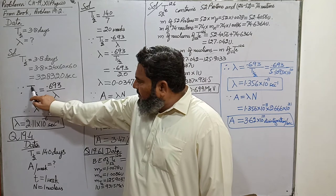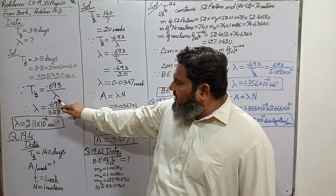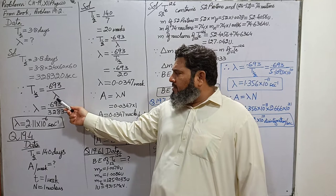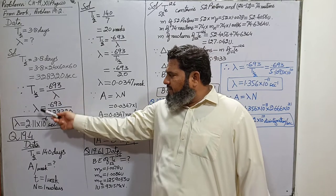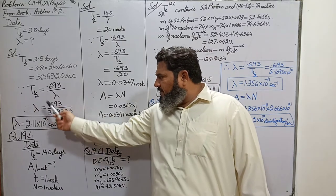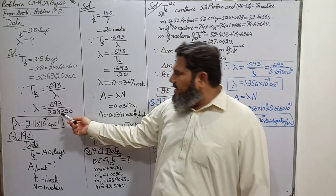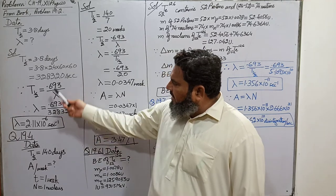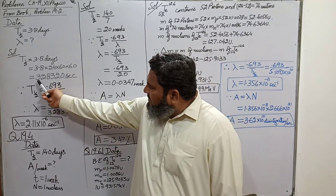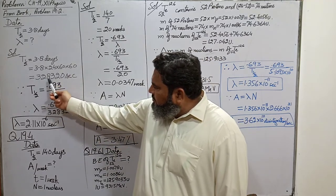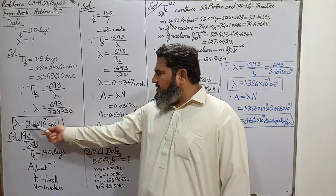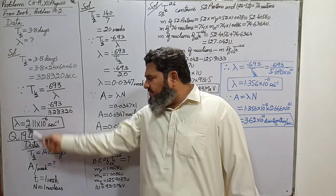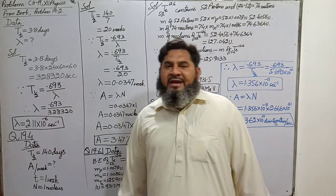Using the formula T½ = 0.693 / λ, we rearrange to find lambda: λ = 0.693 / T½ = 0.693 / 328,320 seconds. We get λ = 2.11 × 10⁻⁶ s⁻¹ as the decay constant.